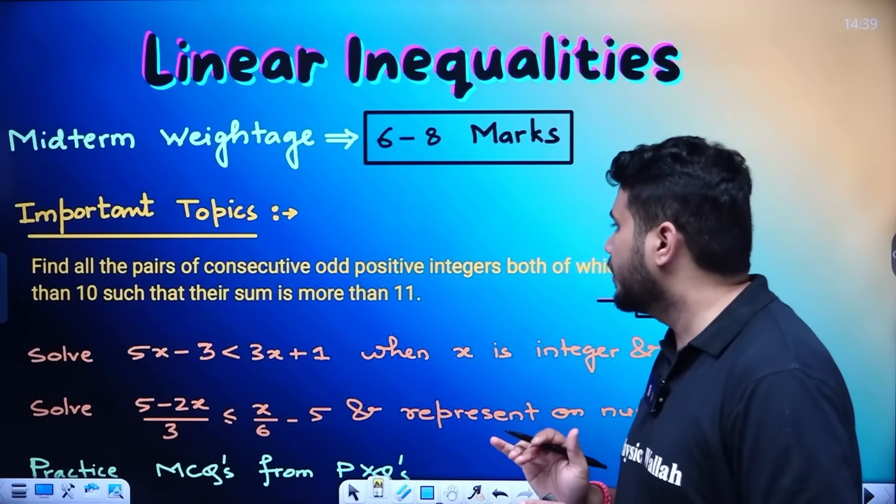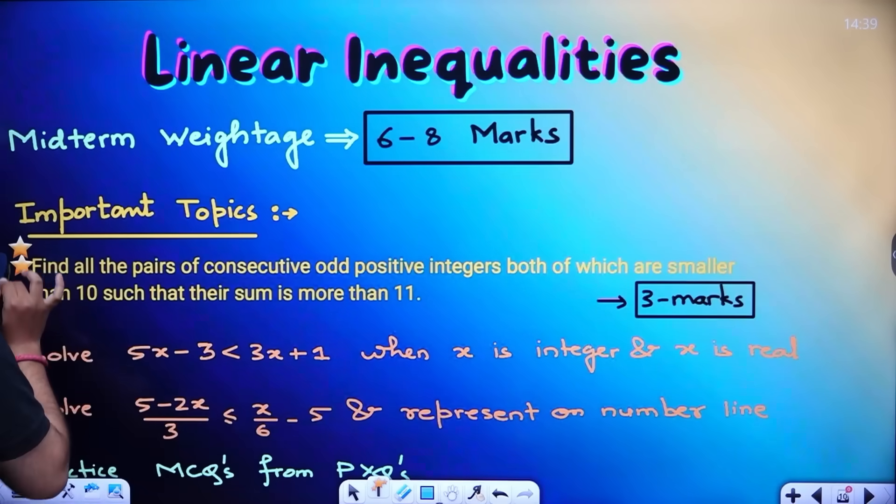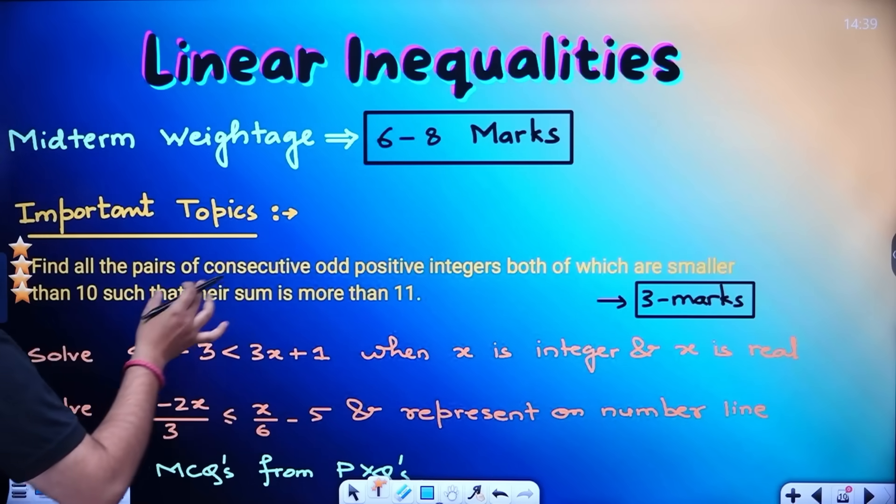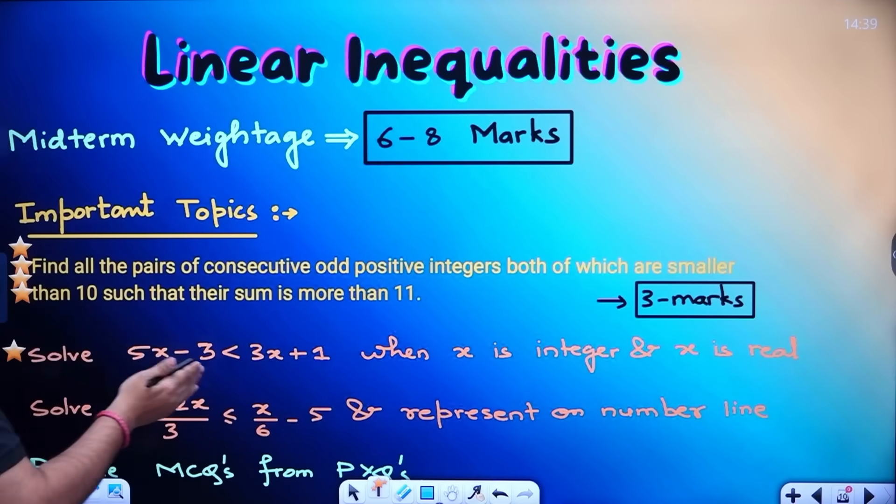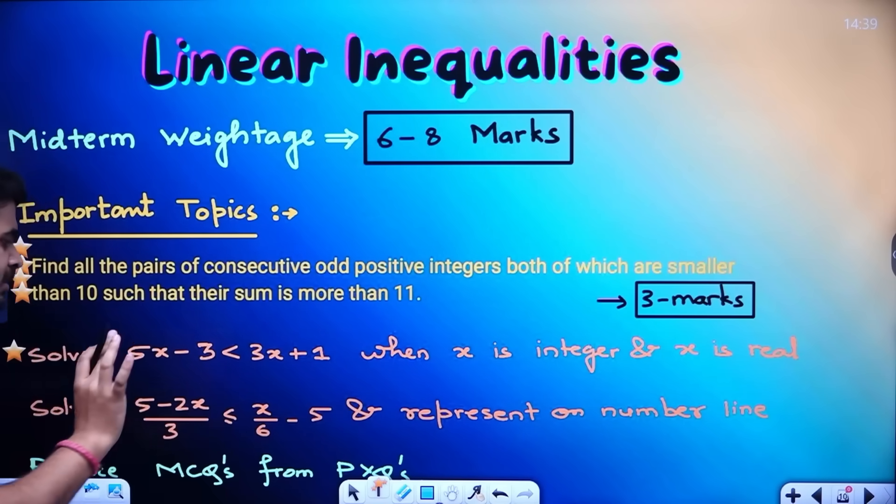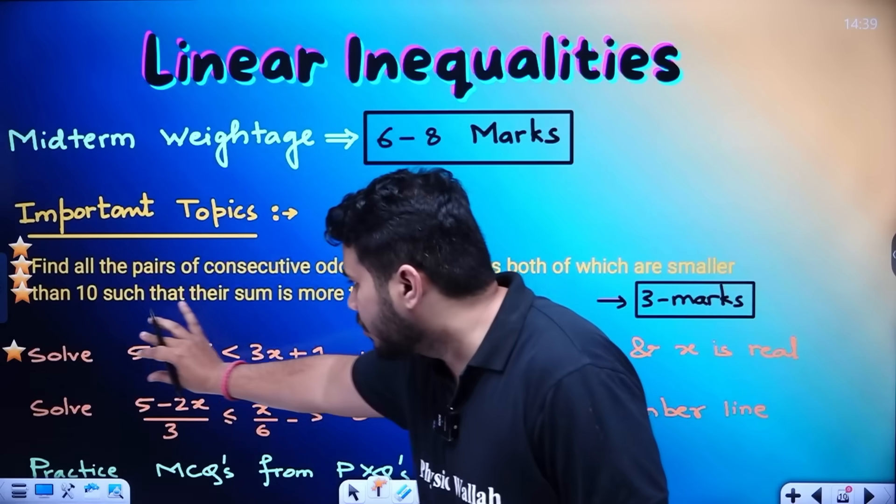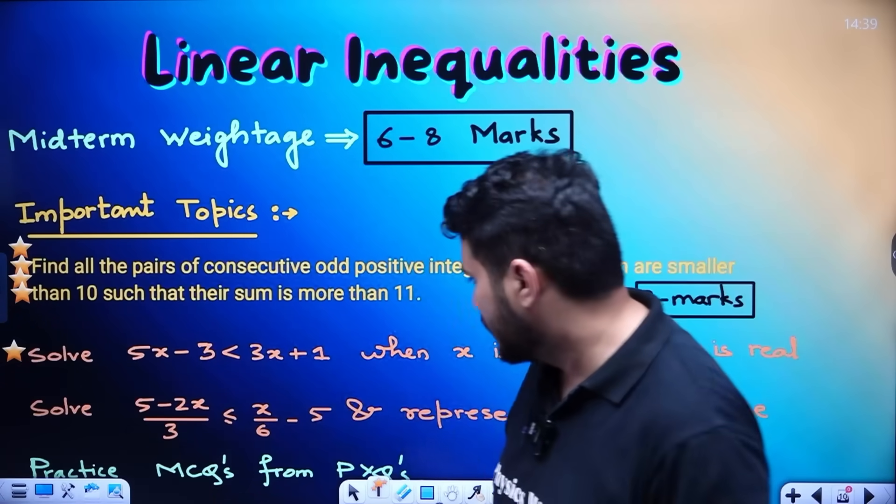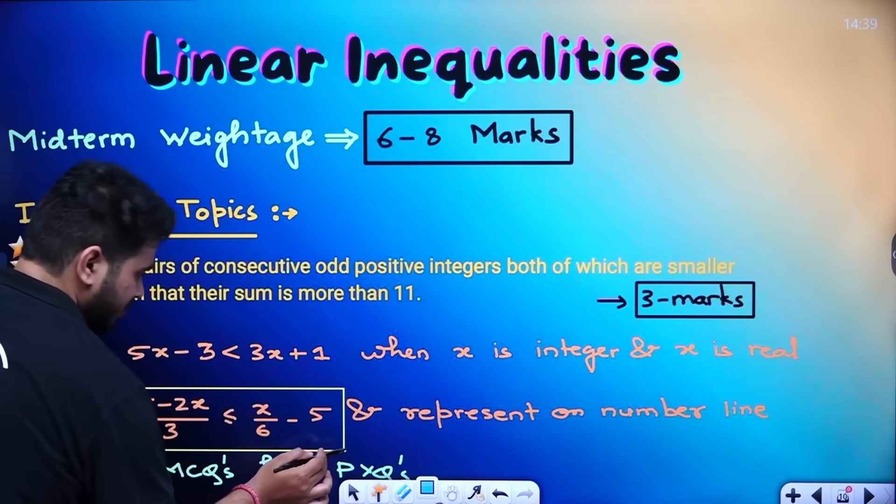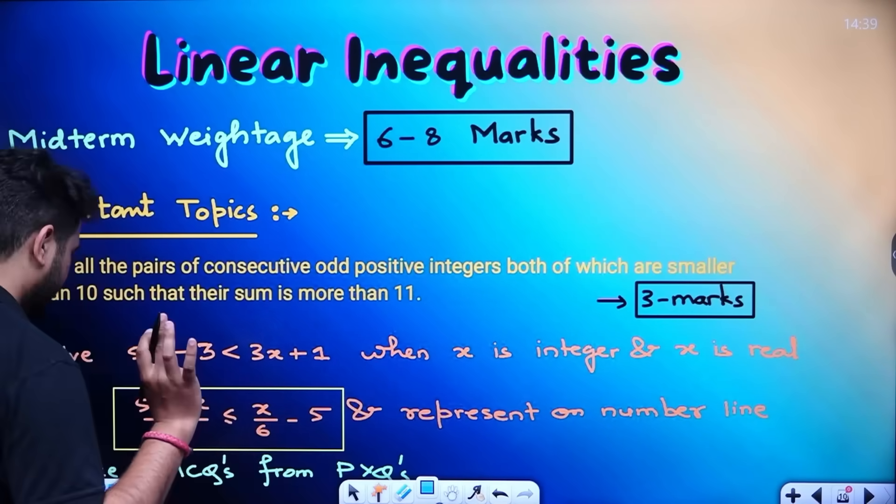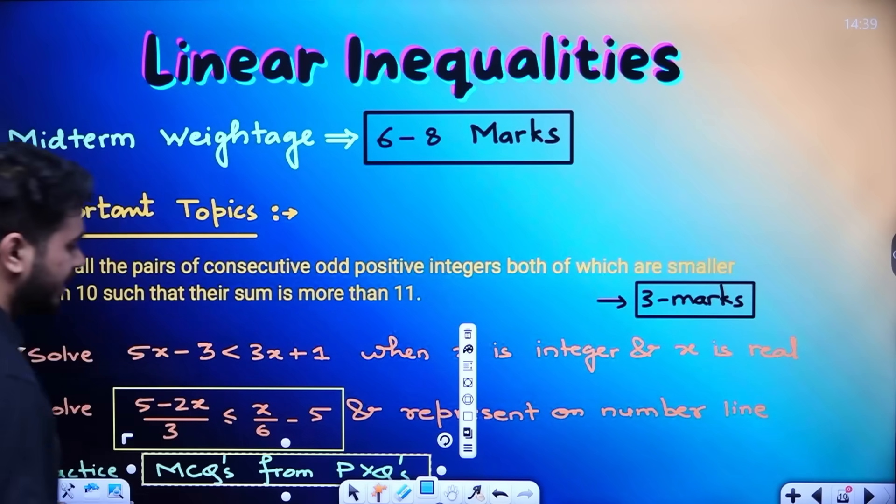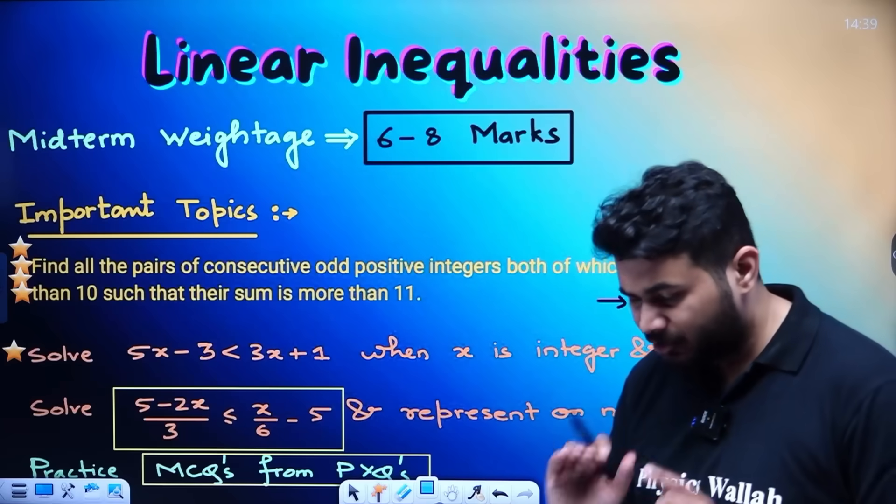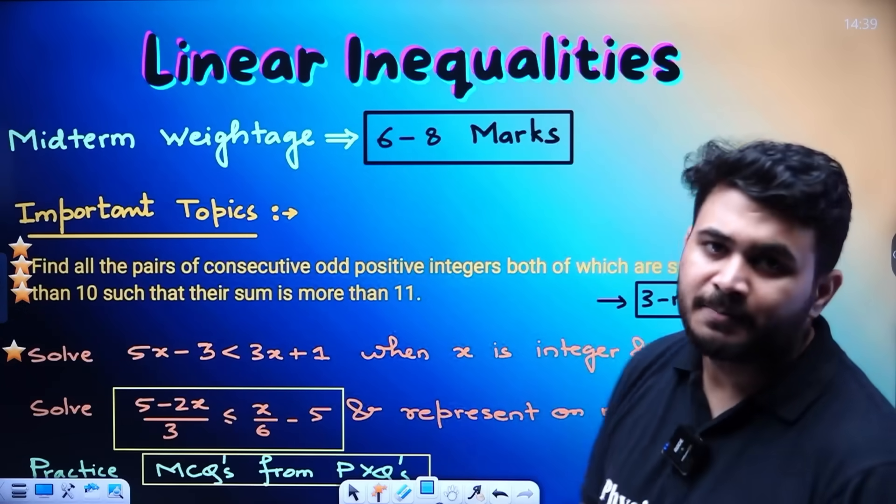Next, moving on to the linear inequality topic. This is an important question, my dear student. 100% either question, fixed. In board exam also. Find all the pairs of consecutive positive integers both of which are smaller than 10 and sum is more than 11. And this one problem I have given you. You need to solve this. When x is integer, when x is real. Either problem. But yes. If you understand the concept how to solve this. And integer and real number. This is a problem which has repeated most number of times. Solving this inequalities and representing it on the number line. And along with this, you need to practice MCQs and PYQs from MCQs from PYQs. Previous year question papers. Practice sufficiently.